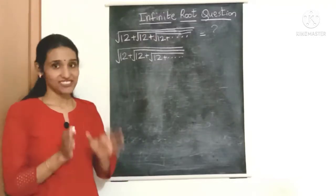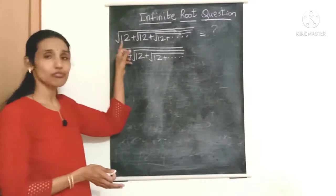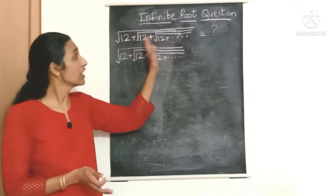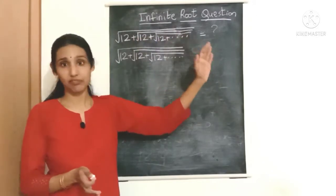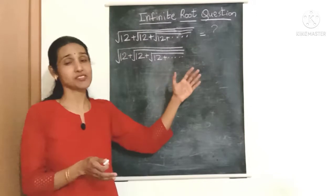Hello everyone, here is an interesting question to solve. What is the value of square root of 12 plus square root of 12 plus square root of 12, which goes on till infinity? So this expression having infinite terms, will it have a finite number as the answer? Let's check out.